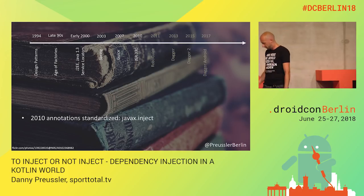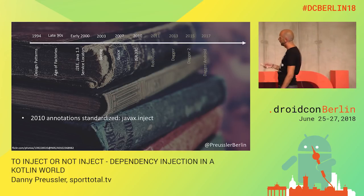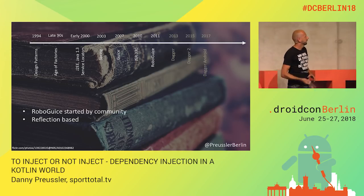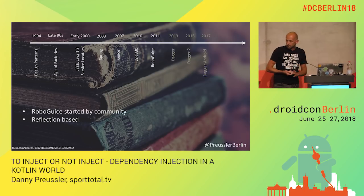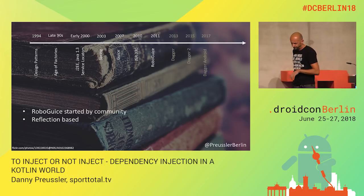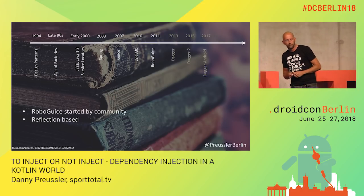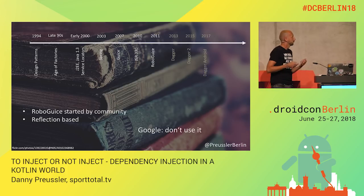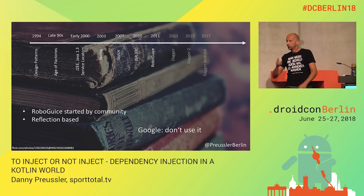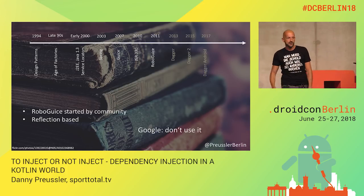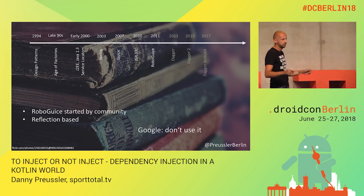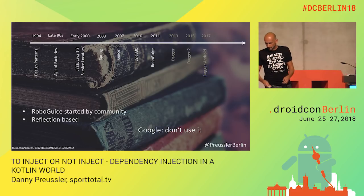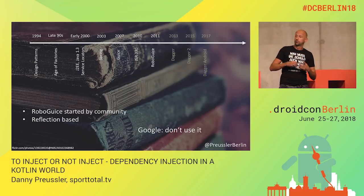Android was started, so we needed dependency injection on Android. We got RoboGuice, started by the community — basically Guice just for Android. But it was reflection-based, and Google said don't use it — actually said don't use dependency injection frameworks, because it was the only one we had by then. The problem was reflection is super slow on Android, and we didn't realize that in the beginning.